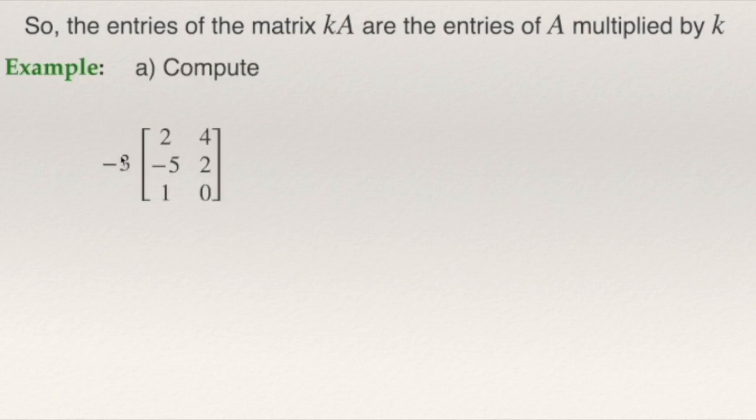For example, negative 3, this scalar multiplied by this matrix. What you need to do is multiply negative 3 times 2, negative 3 times 4, negative 3 times negative 5. So multiply each element of the matrix by this negative 3 and the answer will also be a matrix.